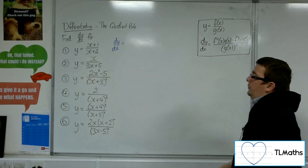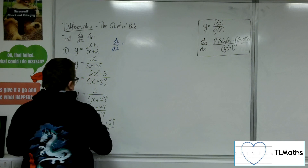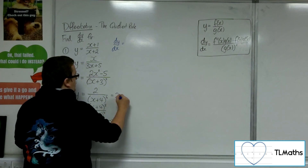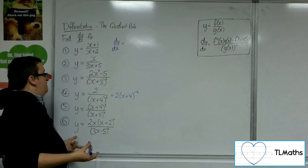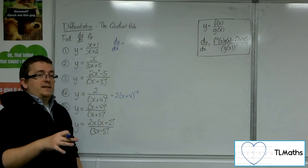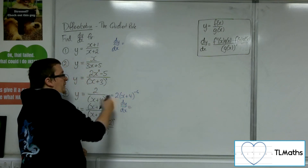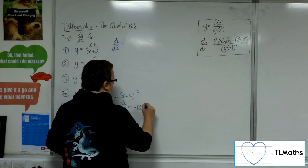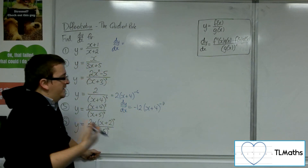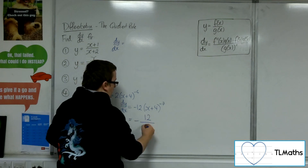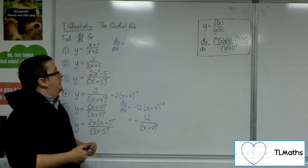Let's have a look at number 4: y equals 2 over (x+4) to the 6. This question you could use the chain rule, writing it as 2 lots of (x+4) to the minus 6. Using the chain rule: minus 6 comes down to the front, multiplying with the 2 gives minus 12, take 1 off the power — the derivative of what's inside is just 1 — so you'd get minus 12 over (x+4) to the 7. That's the answer we should arrive at.